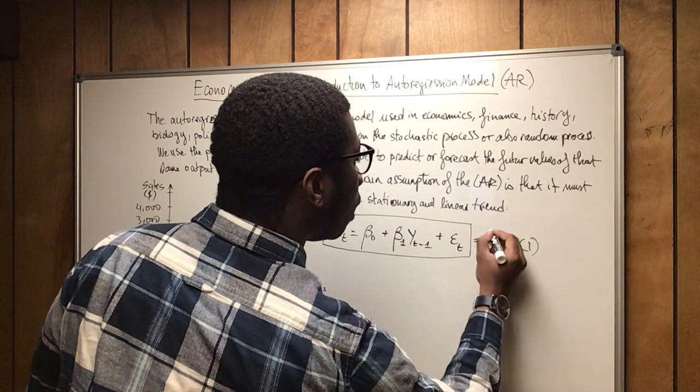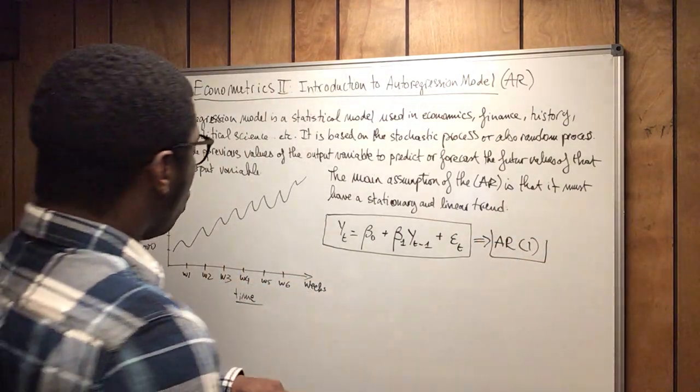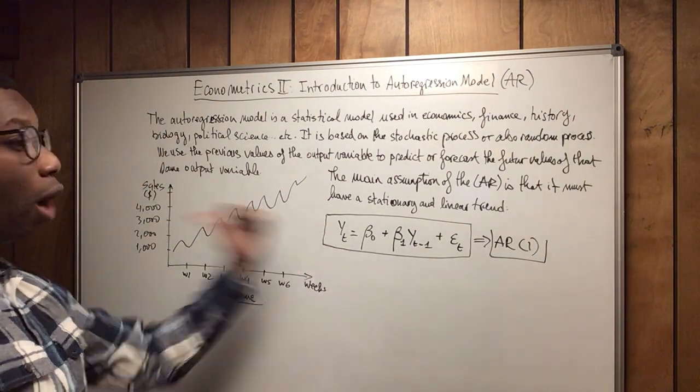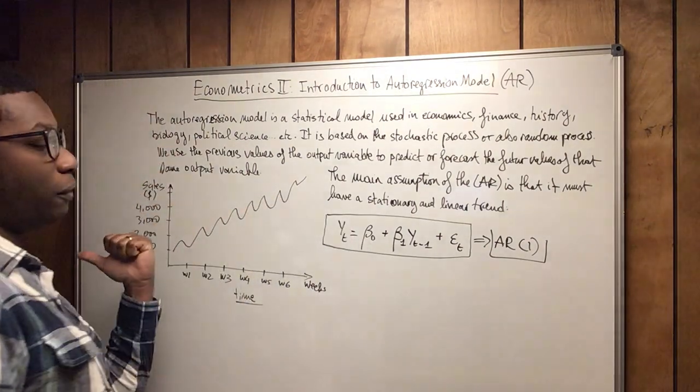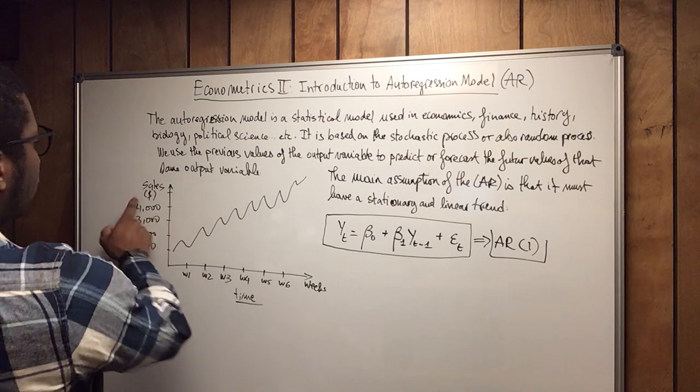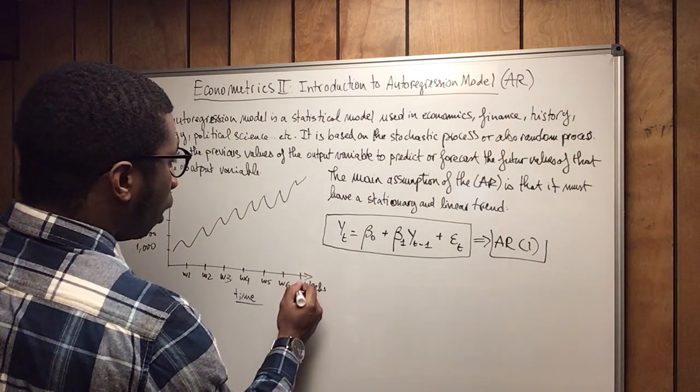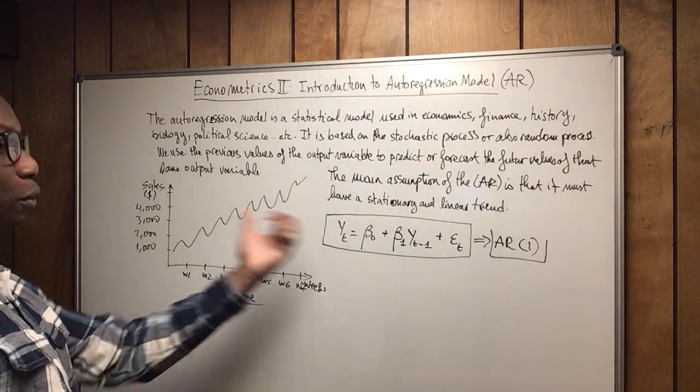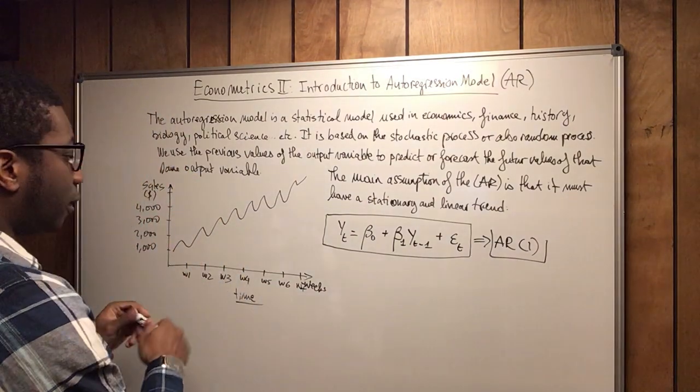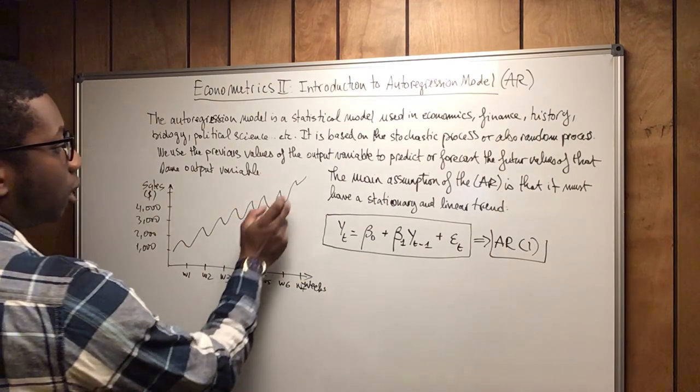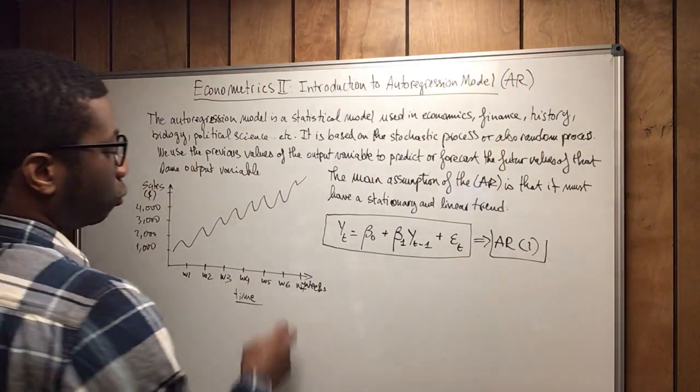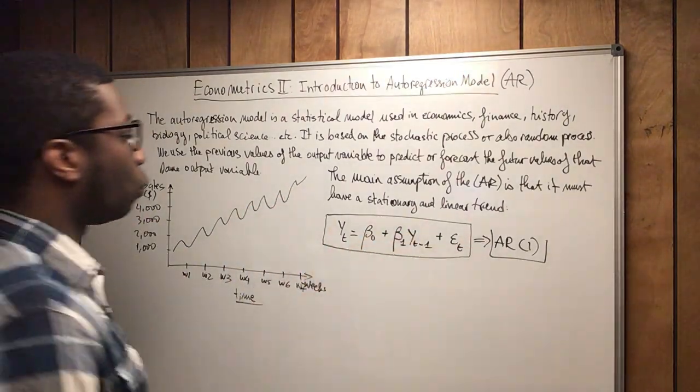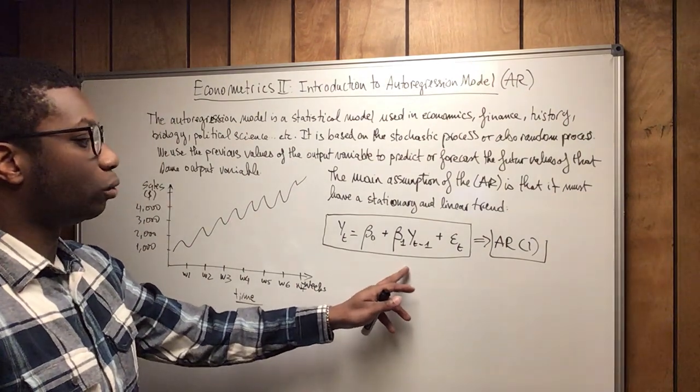Why we call it AR one? Because we're only moving one lag before. So here in this time series data, we're only moving one week before. So we're moving one week before in order to predict what will be the sales for week seven or week eight. So we're trying to move one week before, and then we're applying the stochastic process to determine what will be the values, the sales here in week seven or week eight or week nine. So this is basically the model you see here.